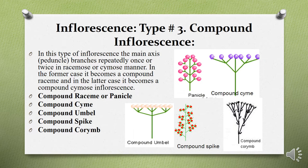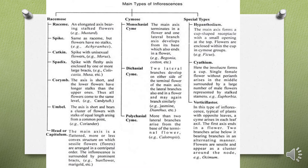This type of inflorescence is known as compound inflorescence. These were the three major types of inflorescence commonly found in plants. A flow chart on this slide shows all three major types and their subtypes, and also includes the special types of inflorescence to be discussed in later slides.